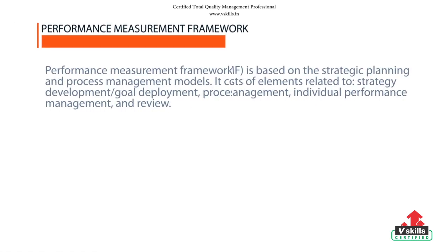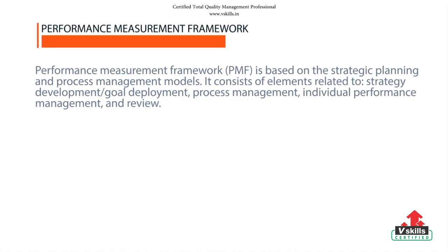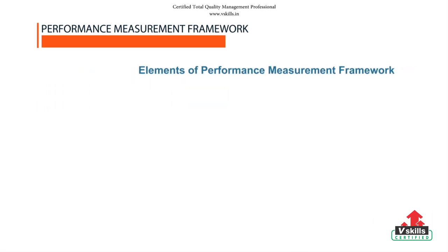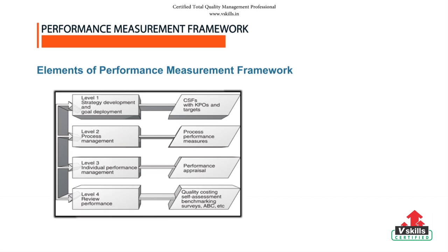A successful performance measurement framework requires identification and translation of customer requirements and strategic objectives into process performance measures. Performance review techniques are used to identify improvement opportunities and drive continuous improvement. The links between performance measurements at all levels of the framework are due to the need for measurement to be part of a systematic process of continuous improvement. There are five elements of performance measurement framework clearly indicated in the given diagram.